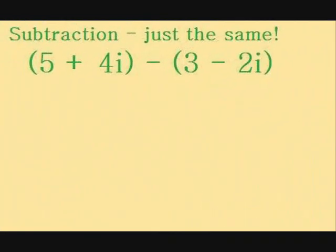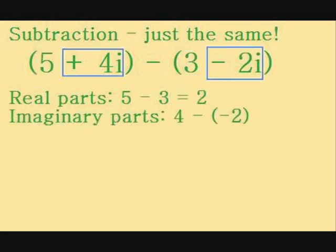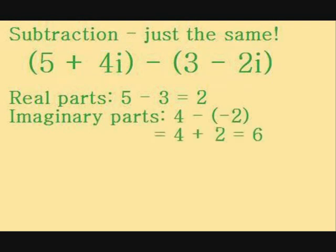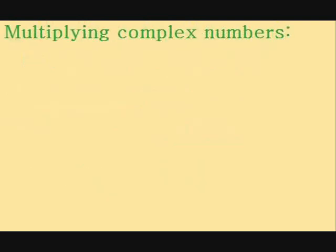Subtraction is just the same. You subtract the real parts and the imaginary parts separately. Let's use the same numbers, but subtract instead of adding: 5 plus 4i minus 3 minus 2i. First, subtract the real parts, 5 minus 3 equals 2, and then subtract the imaginary parts, 4 minus minus 2 equals 4 plus 2 equals 6. So, our answer is 2 plus 6i.